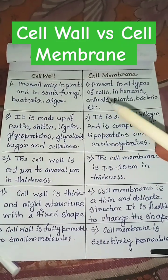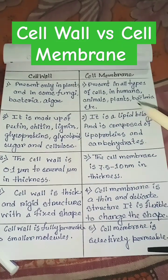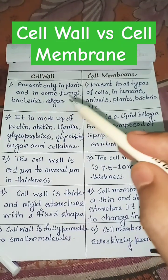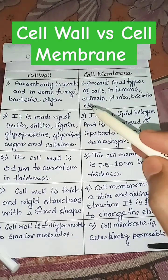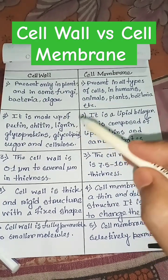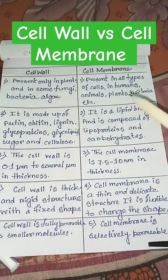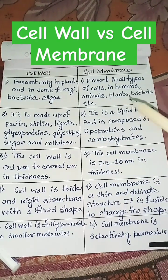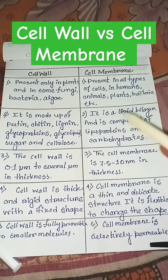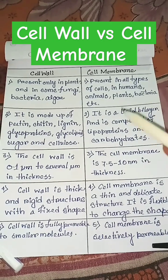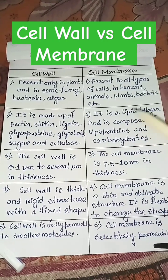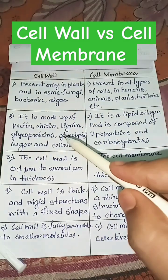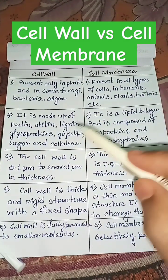Differences between cell wall and cell membrane: the cell wall is present only in plants and in some fungi, bacteria, and algae. But the cell membrane is present in all types of cells — in humans, animals, plants, bacteria, etc.